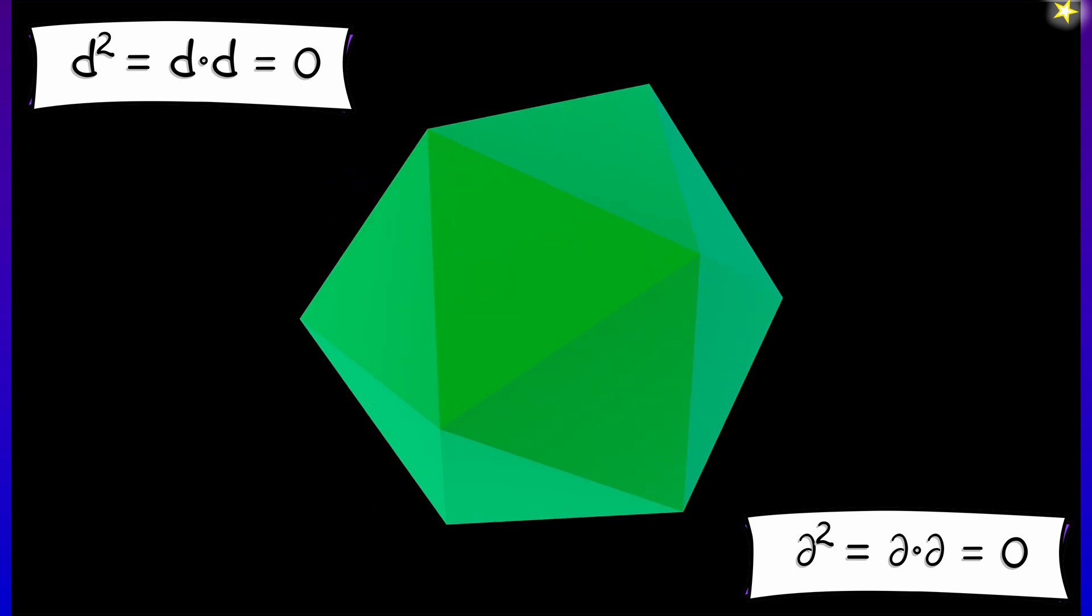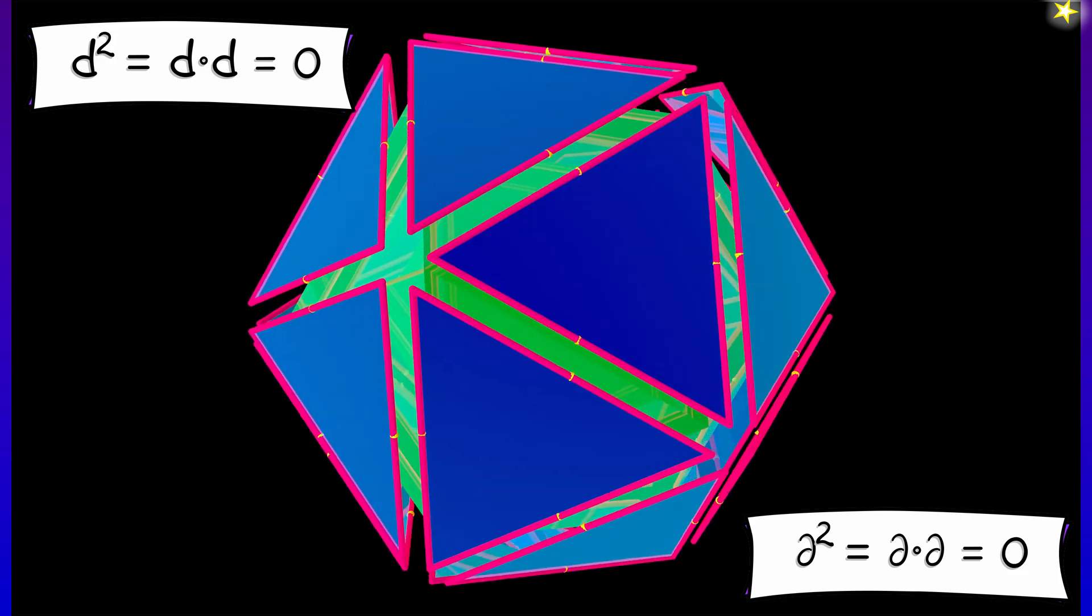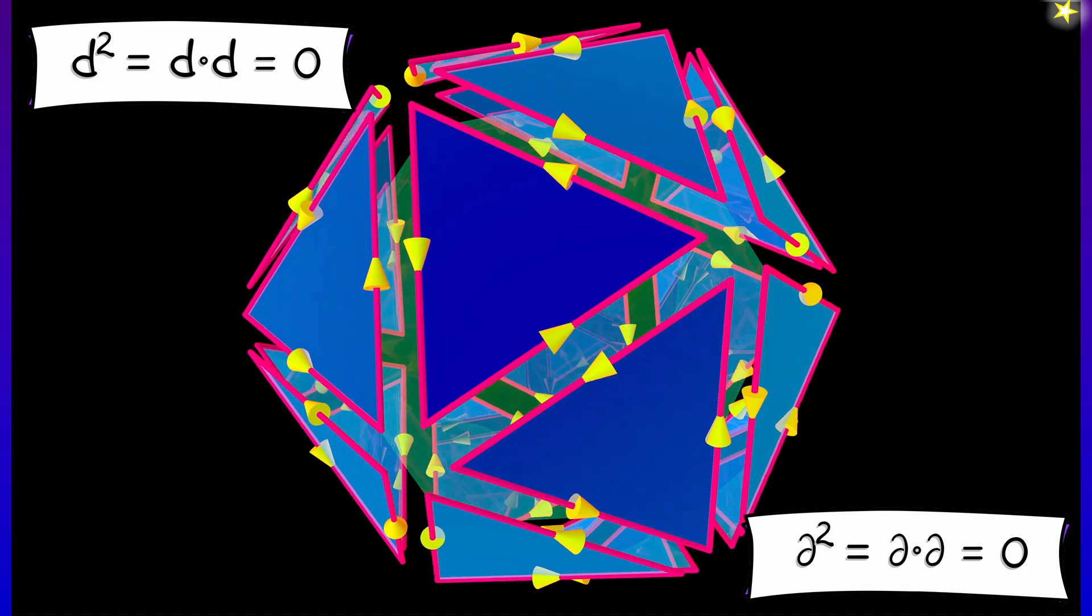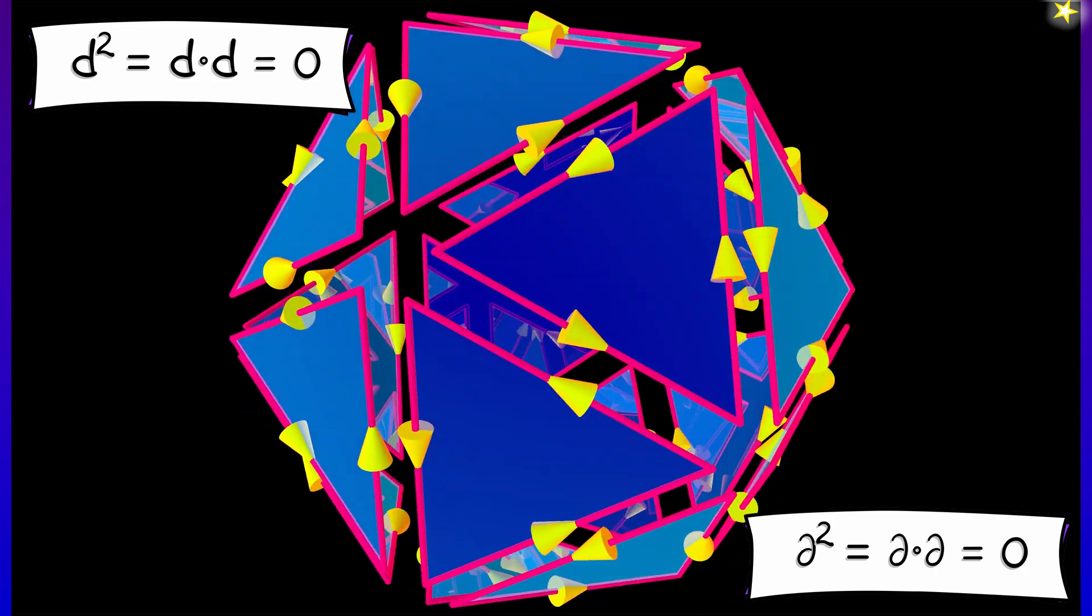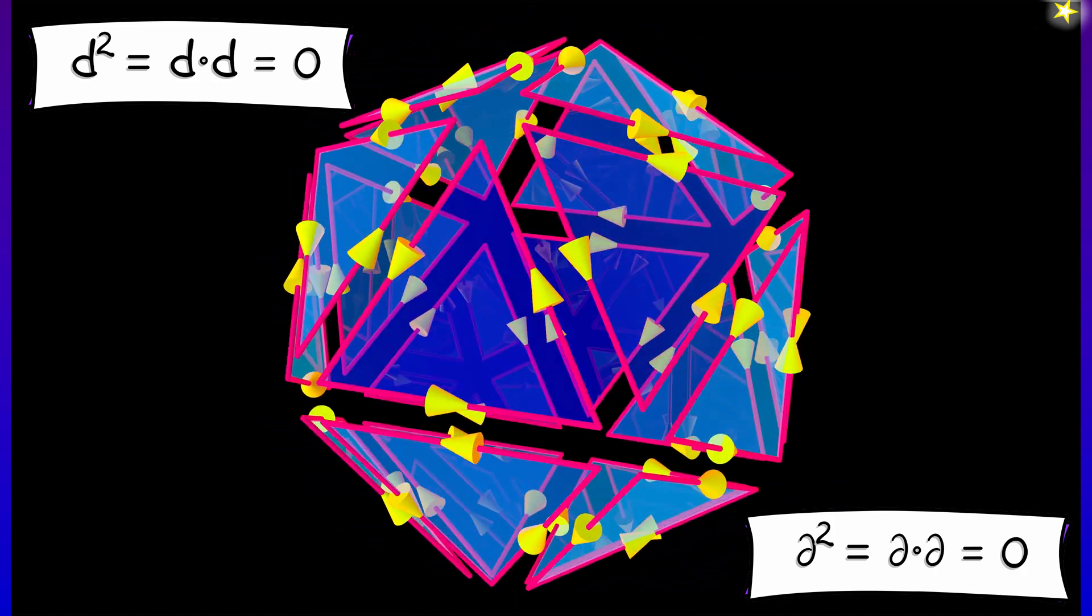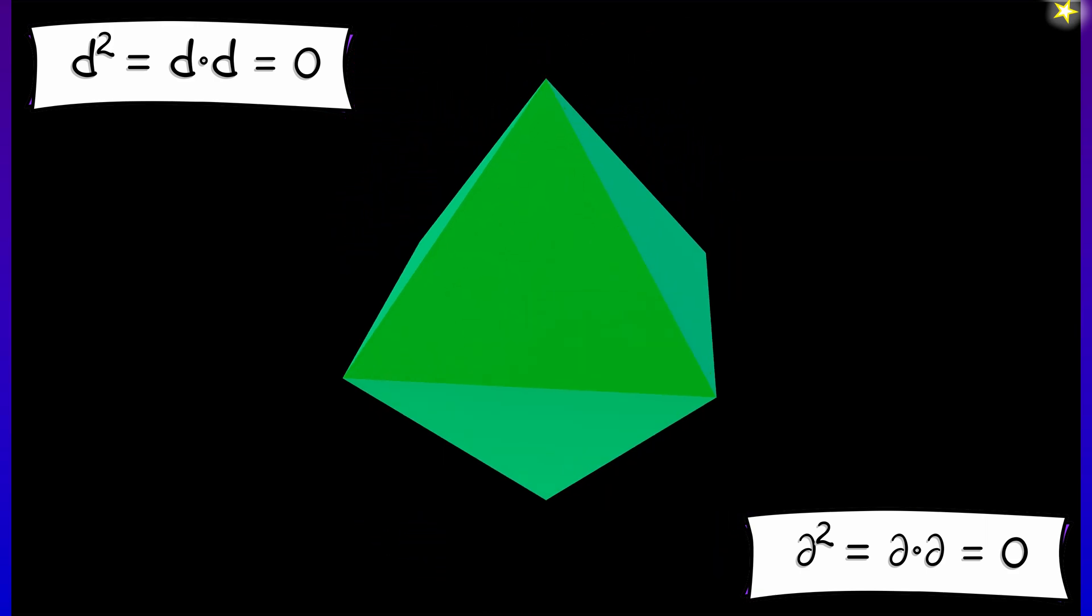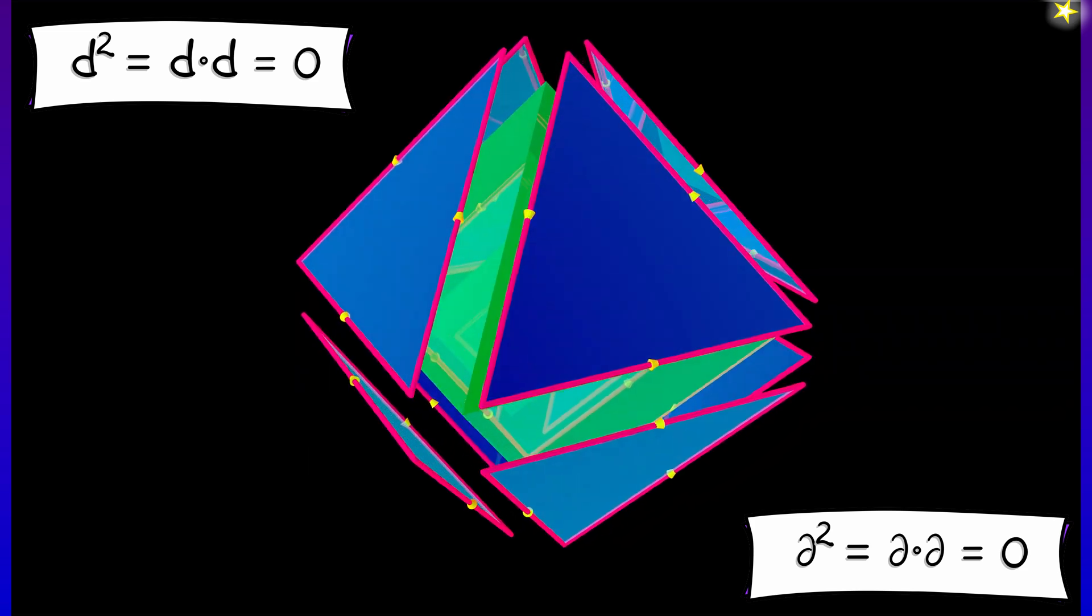And not just a cube, but lots of objects. In fact, anything reasonable that you can write down is going to have this property that when you take the boundary, and then you take the boundary of that, you wind up getting something where whatever you get cancels out. You've got to be careful with orientations, but it works.